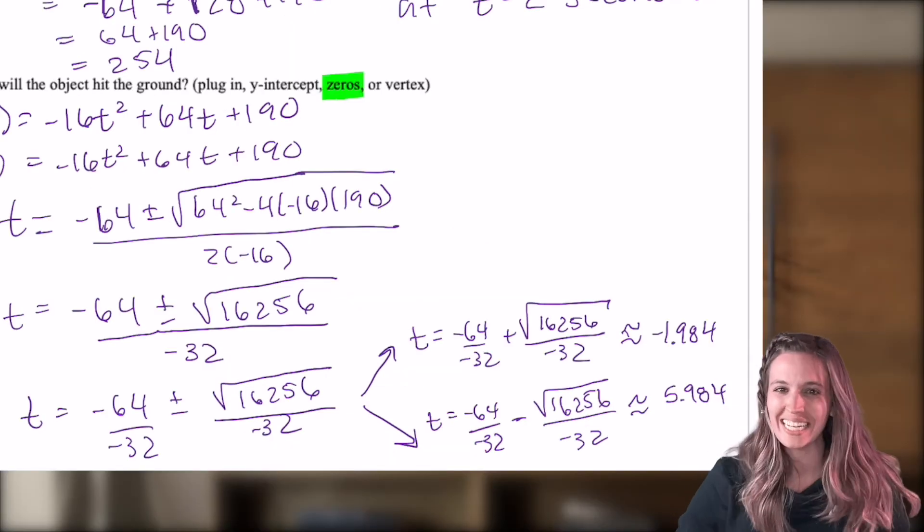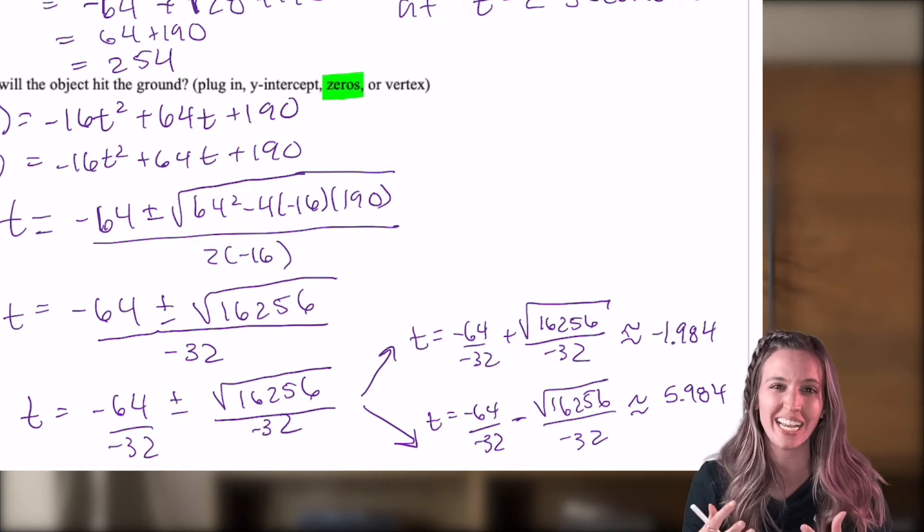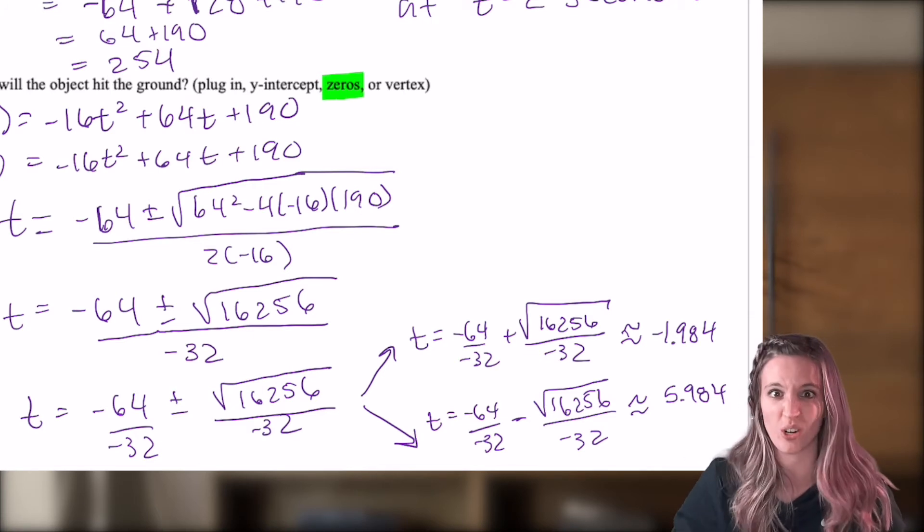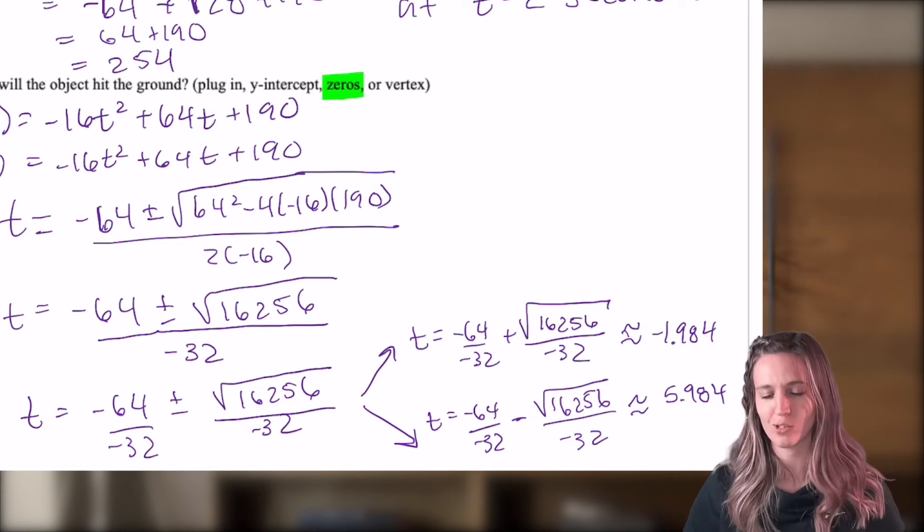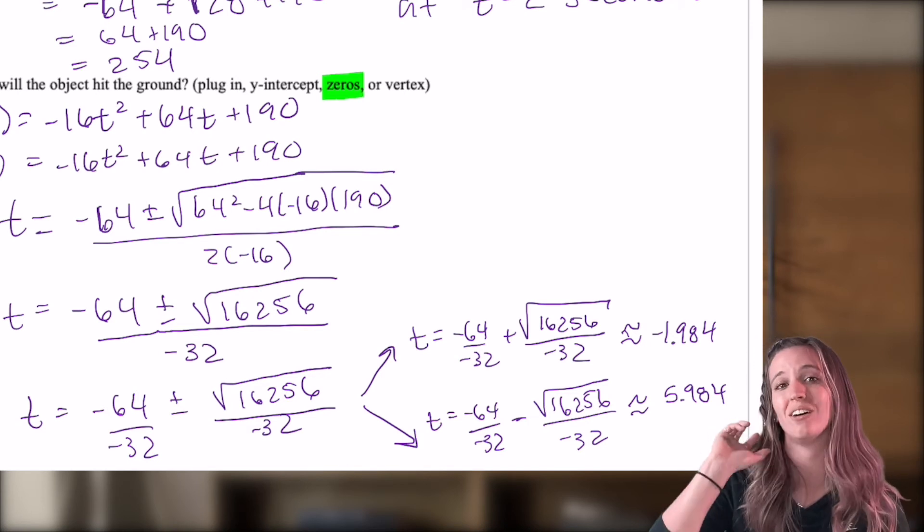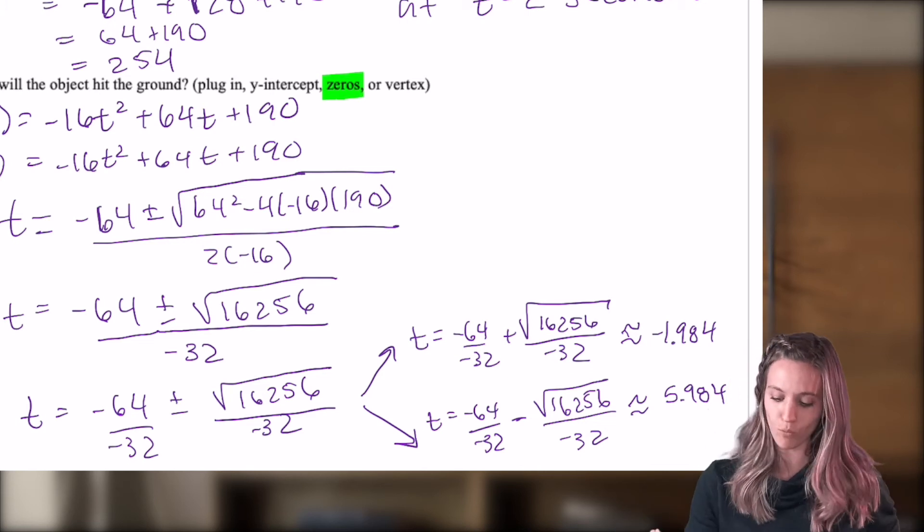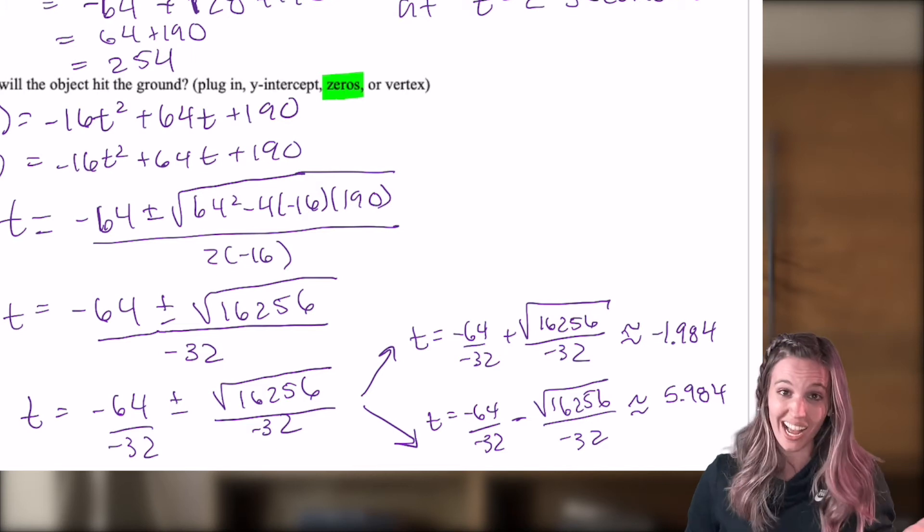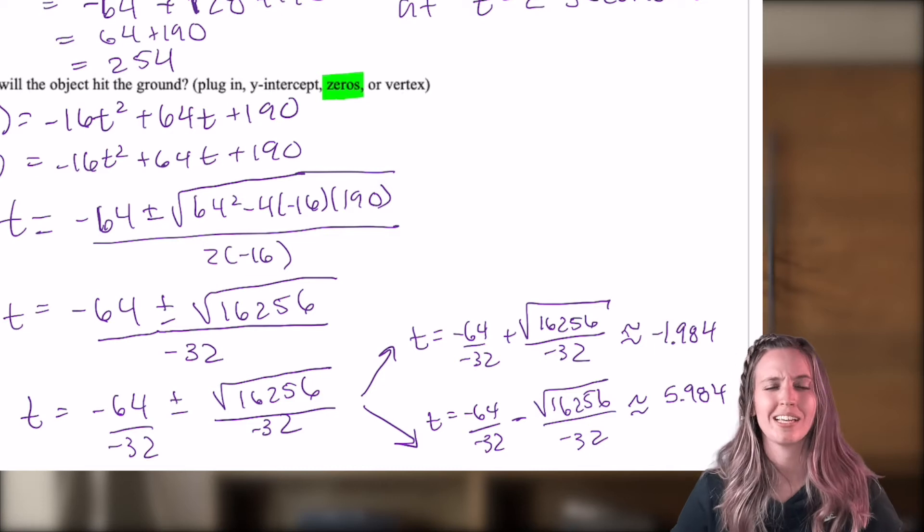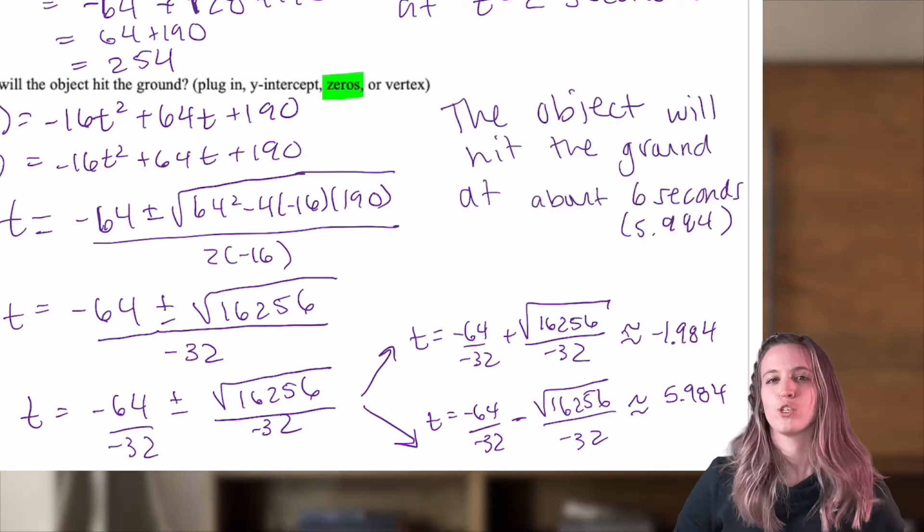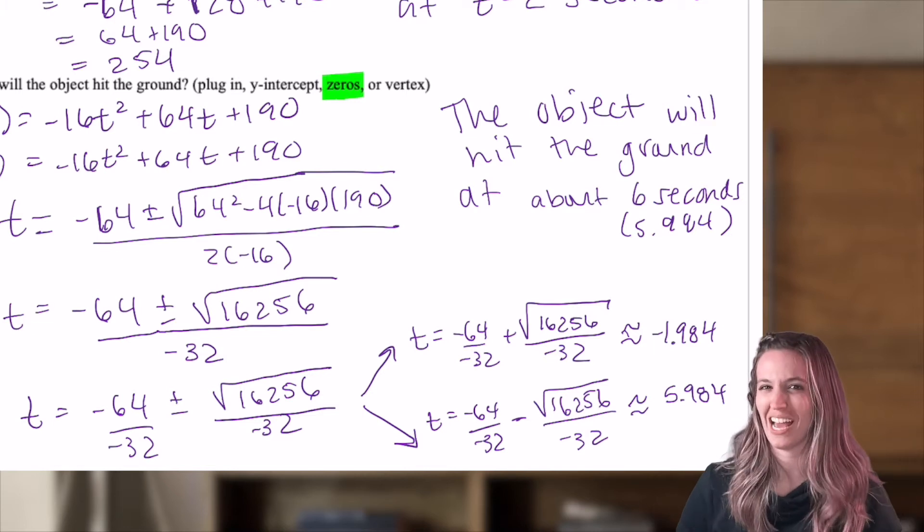I didn't get very pretty values, but that's okay. Since we're in context here and we're trying to give time in seconds, I don't want to leave a radical or a square root in my final answer. So I did go ahead and plug these into my calculator and get approximated values. Anytime we're approximating, always take it out to at least three decimal places. So I got t equals negative 1.984 and I got t equals 5.984. So which of those values makes sense for time? The positive one, right? So the object hits the ground at about six seconds or 5.984.